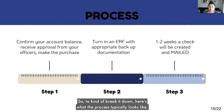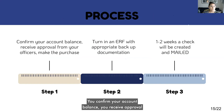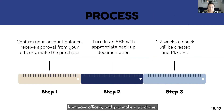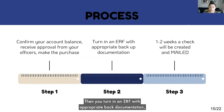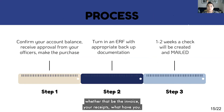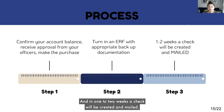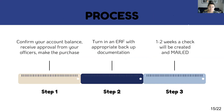To break it down, here's what the process typically looks like: you confirm your account balance, you receive approval from your officers, and you make a purchase. Then you turn in an ERF with appropriate backup documentation — whether that be the invoice, receipts, or what have you. And in one to two weeks, a check will be created and mailed.